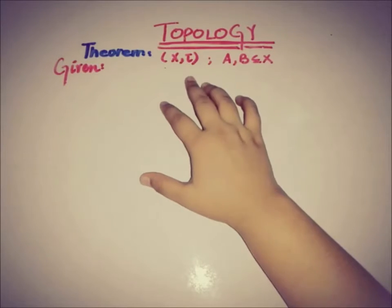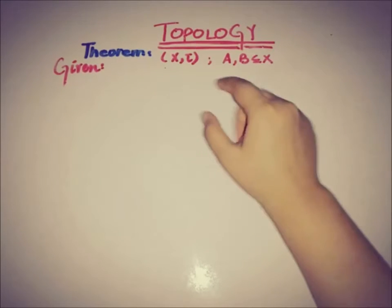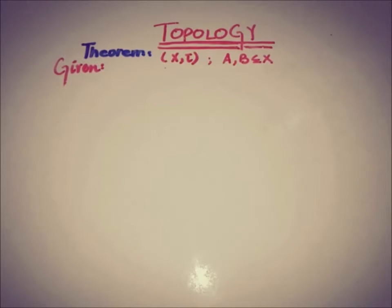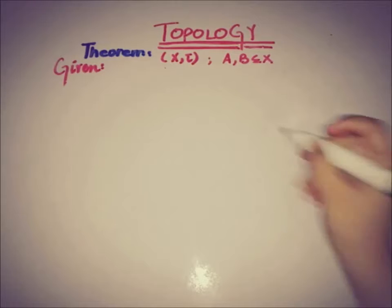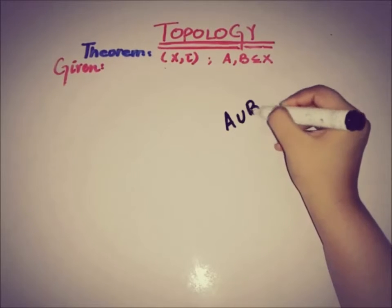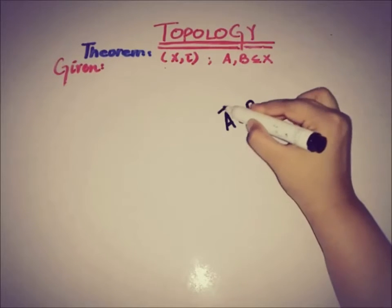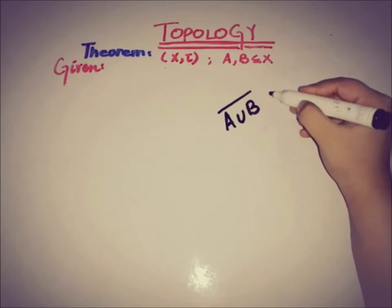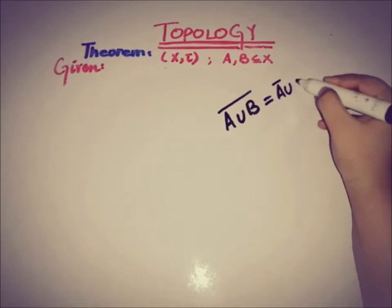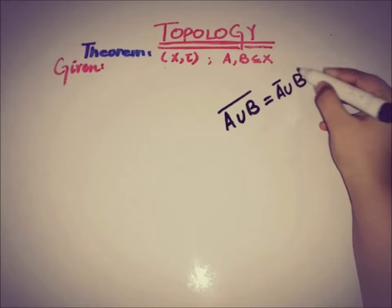So, if X and tau is a topological space and A and B are two subsets of X, then the theorem states that the closure of A union B is equal to the closure of A union the closure of B.